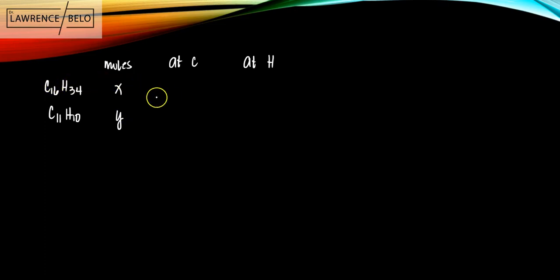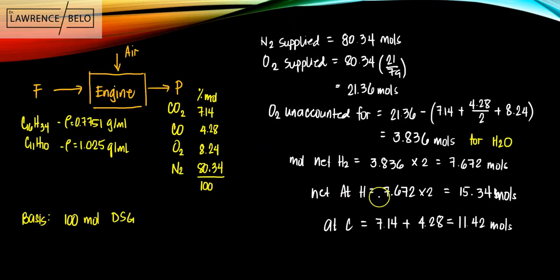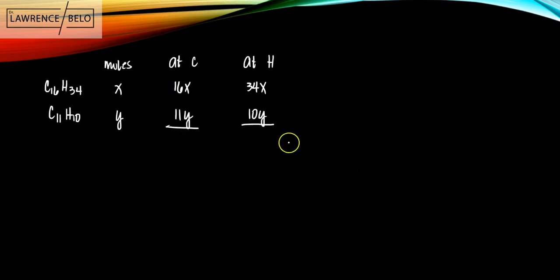In C16H34, for carbon, that's going to be 16X. This is going to be 11Y. And then this is going to be 34X. And then this is going to be 10Y. However, we have already solved earlier that the moles of hydrogen atoms are 15.34 and the moles of carbon atoms are 11.42.